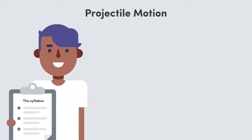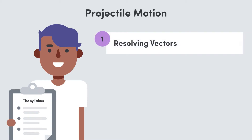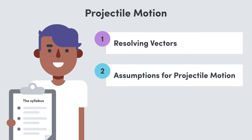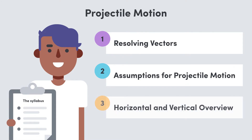To get through it all, we'll start by looking back at how to resolve vectors into their horizontal and vertical components. Then we'll take a look at the assumptions we use to make everything much more manageable. Finally, we'll see how each of these components behaves.